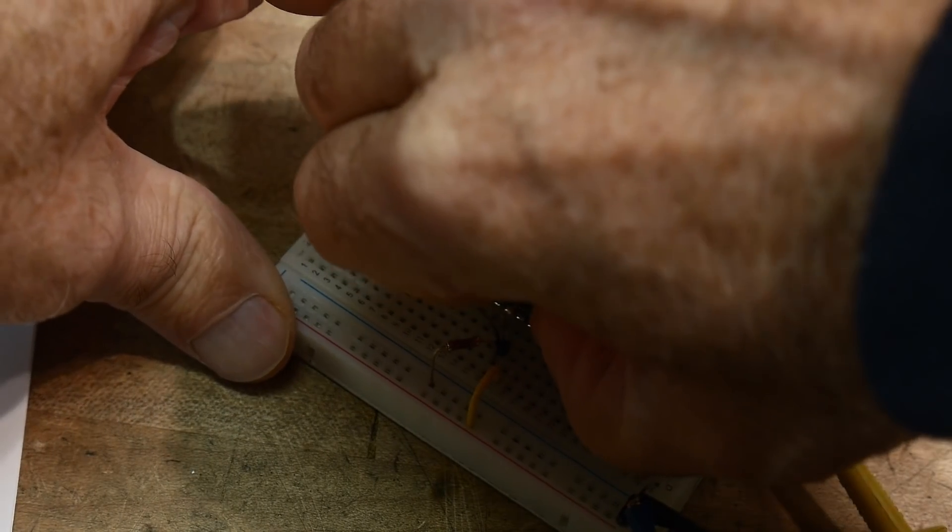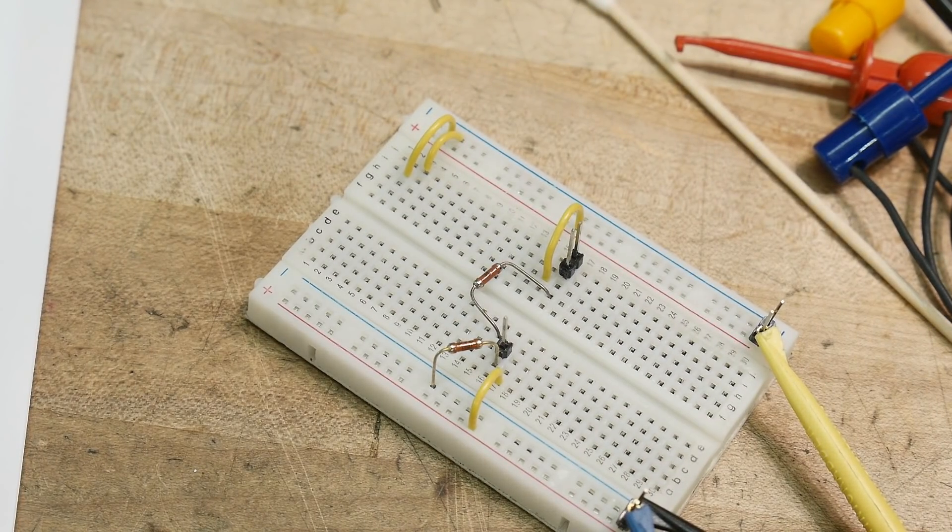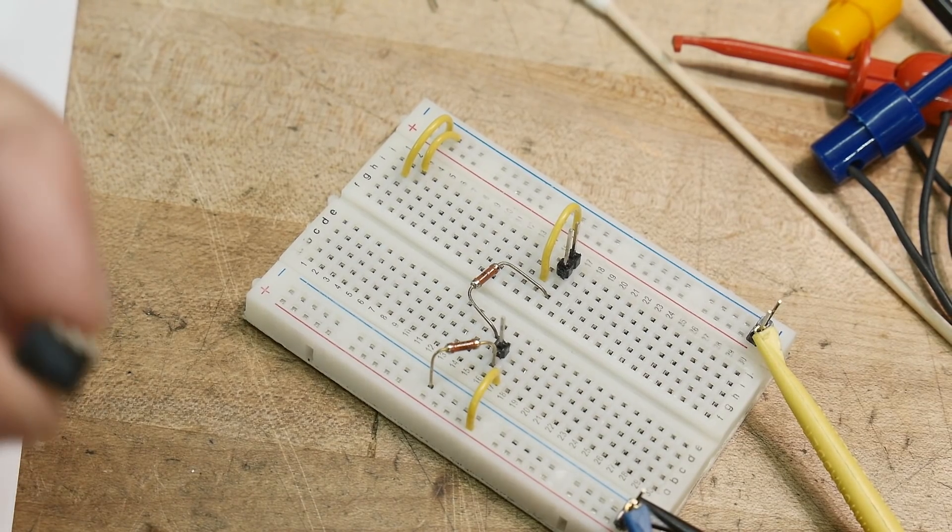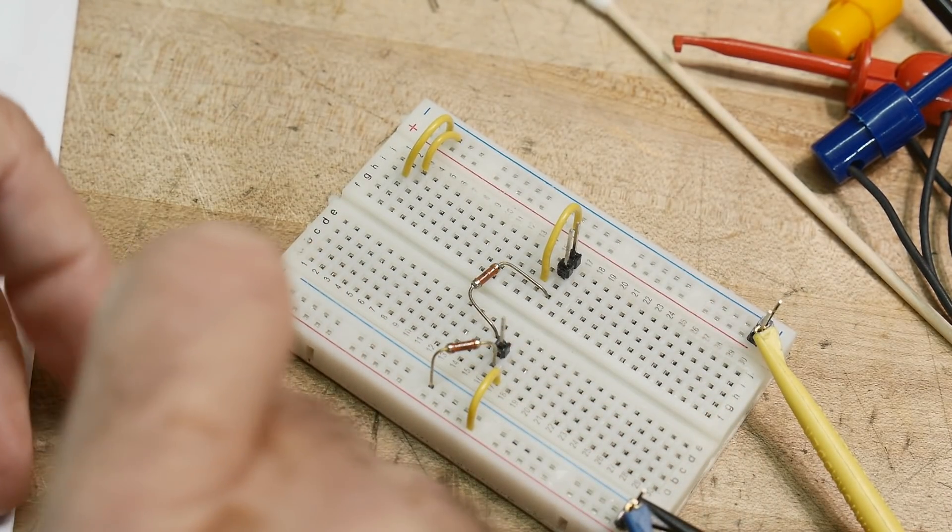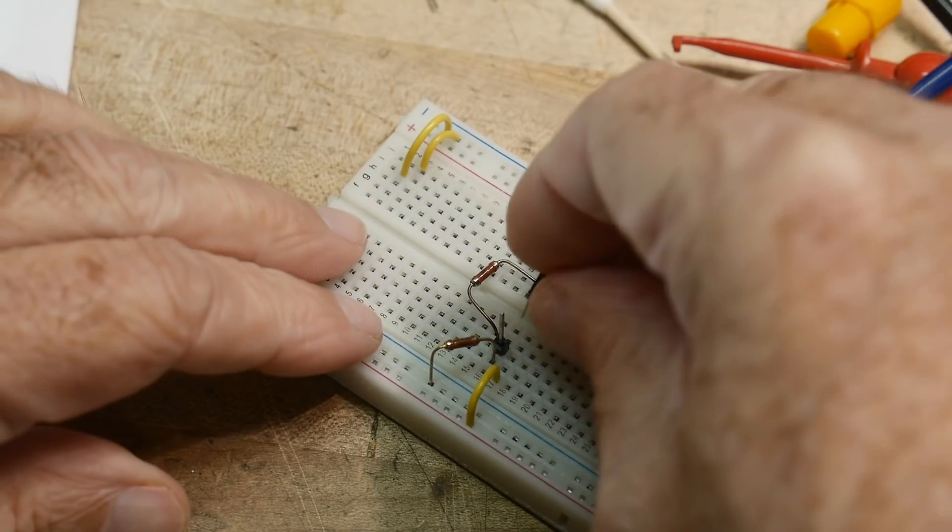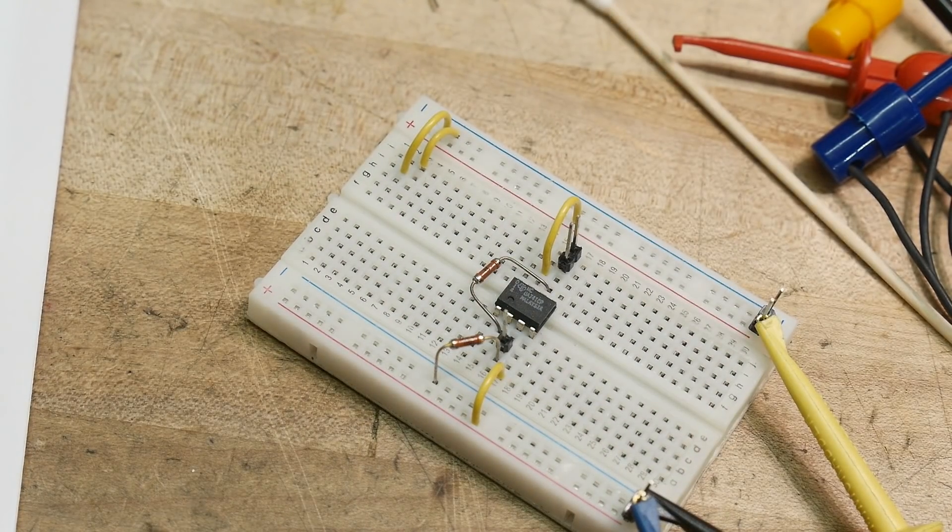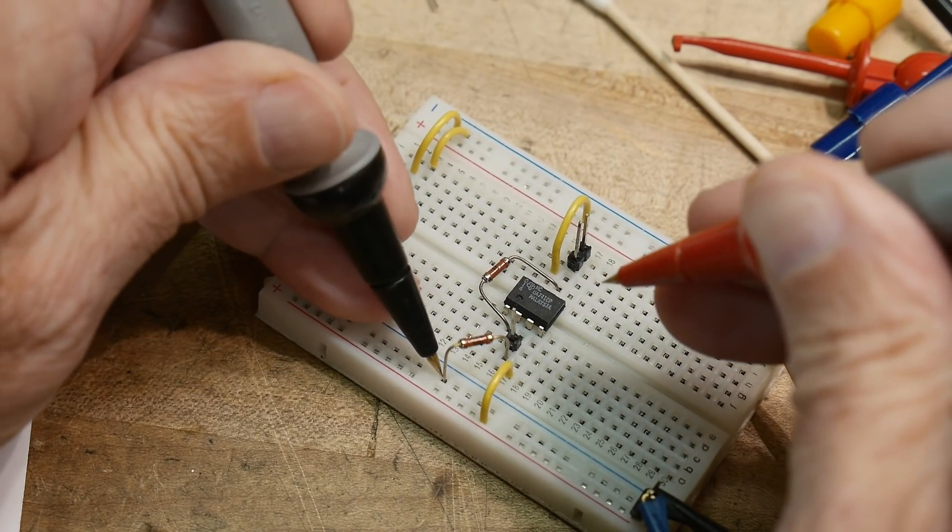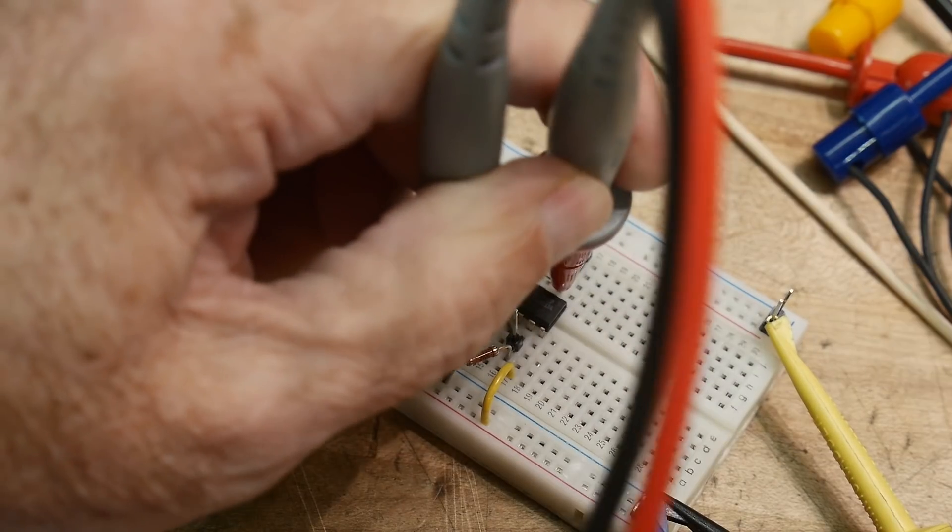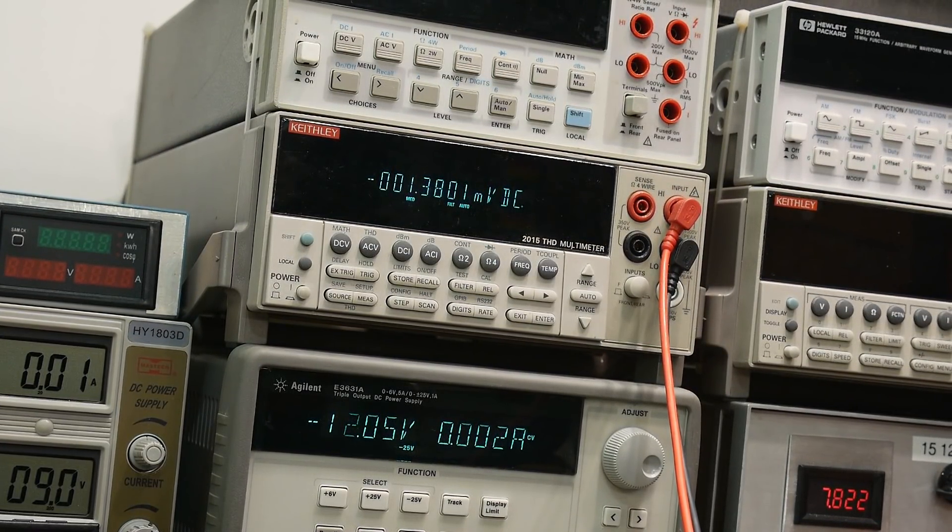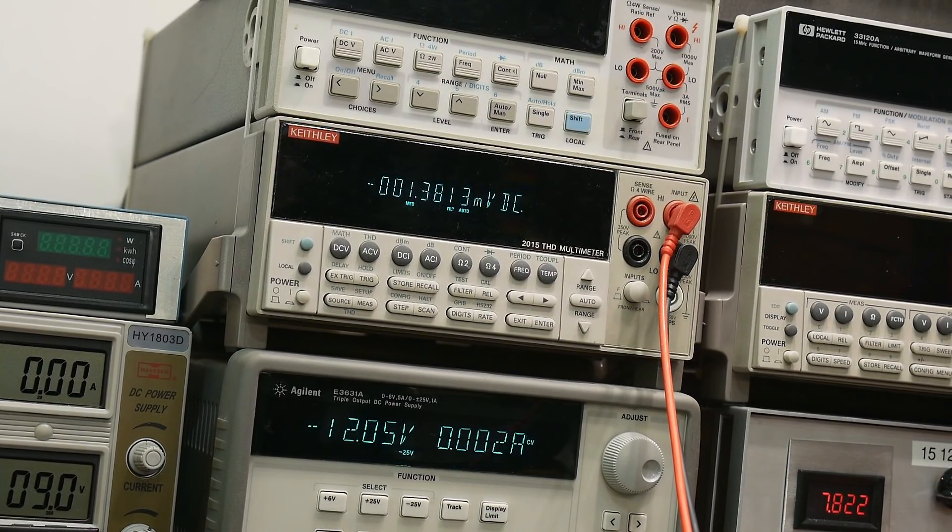Let's pull out this 741. Let's measure another one, just to see what kind of range we get. I'll pop him in. Got to bend the legs correctly so they go in circuit here. I'm running at plus or minus 12 volts. Let's measure this one for offset voltage. Yeah, that's more like what I would think. I think we got lucky with that other one. This one is measuring 1.3 millivolts. That's about what I would expect with the 741, about 1 to 2 millivolts somewhere in that range.